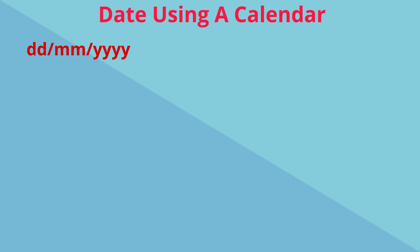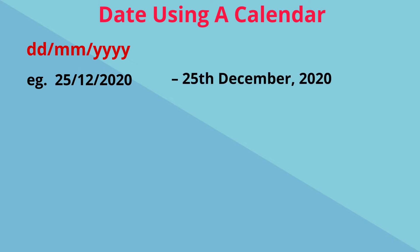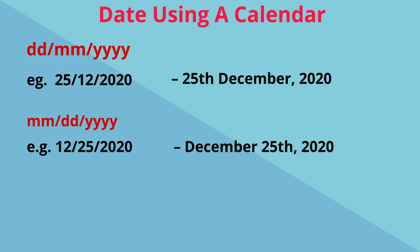So if we write 25-12-2020, that represents the 25th day in the 12th month of the year 2020. We can also switch the positions of the month and the day, stating the month first — it still shows the 12th month, the 25th day in the year 2020.